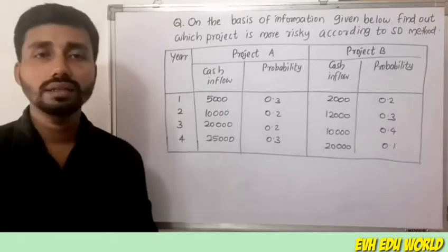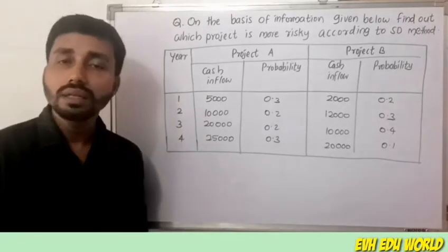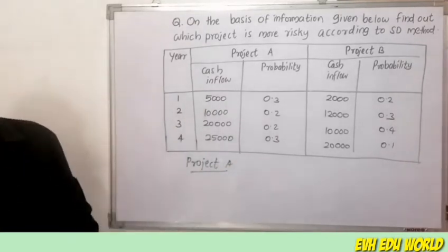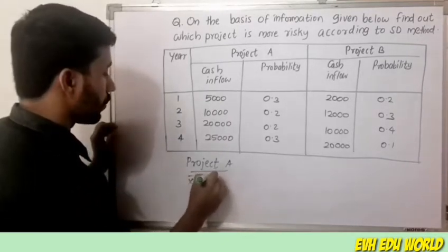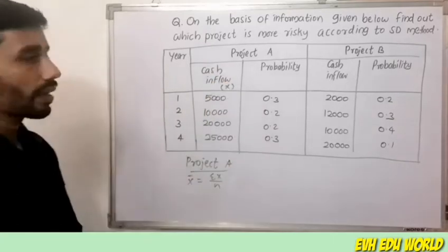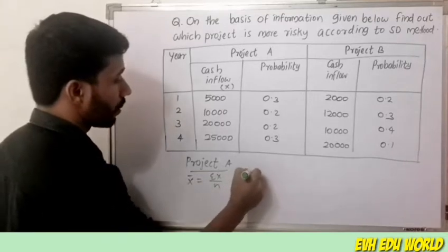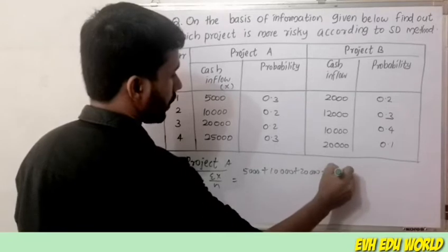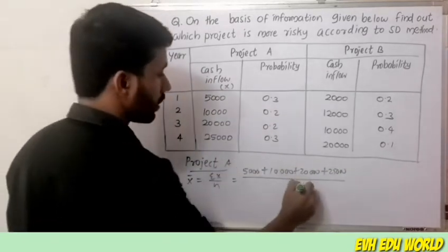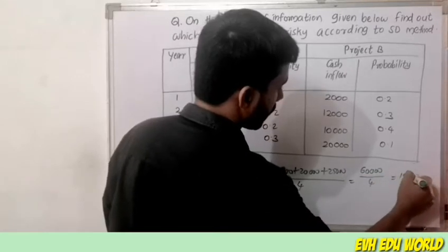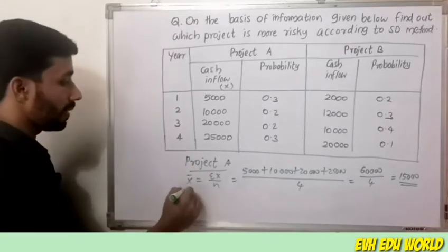For Project A, the mean (x̄) = (5,000 + 10,000 + 20,000 + 25,000) divided by 4 years = 60,000 divided by 4 = 15,000.